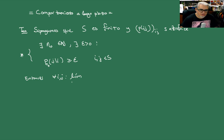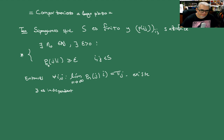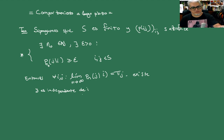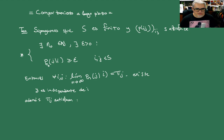Para toda I y toda J en S, el límite cuando N tiende a infinito de P^N de J dado I es igual a π_J. Existe y es independiente de I. Además, las π_J satisfacen que π_J es mayor que cero para J en S, y la suma sobre J en S es exactamente 1.